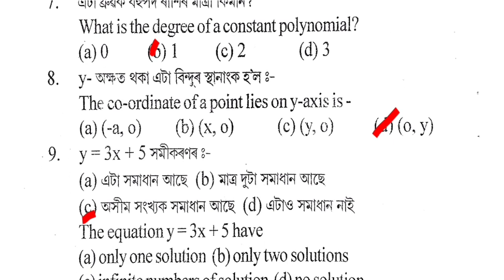Next question: The coordinates of a point that lies on the Y-axis — what are they? The correct answer is Option D: (0, y).